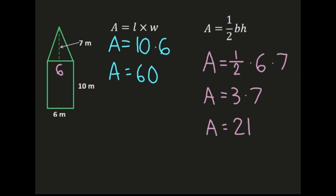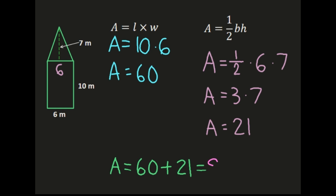Then I need to find the area of the total composite figure, which means I'll add together the area of the rectangular portion to the area of the triangle portion. So 60 plus 21 is 81, and I'm working in meters, so my composite area is going to be 81 meters squared.